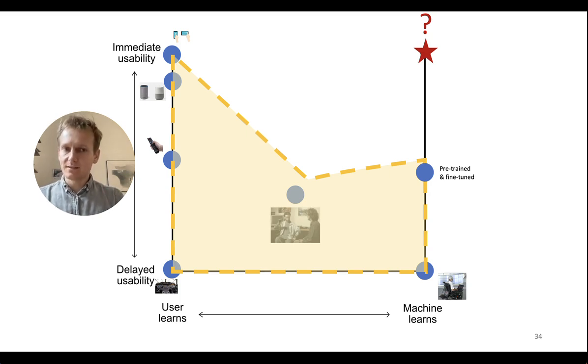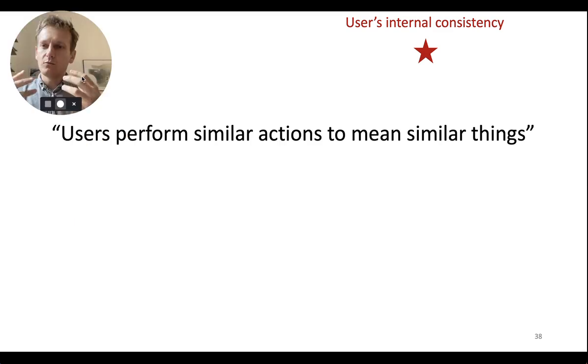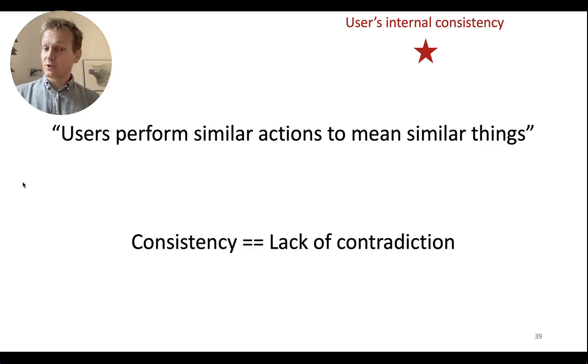The question is where is this other corner that I have not touched yet? I don't have a clear example, but I know from work I've done and work I've seen that it has to do with some sort of measure of users' internal consistency. One definition is that users perform similar actions to mean similar things - they are somehow internally consistent with themselves, they have a mental model of what to do and they do it in repetition. Another definition of consistency is by defining the opposite, a lack of contradiction - users more likely won't contradict themselves.